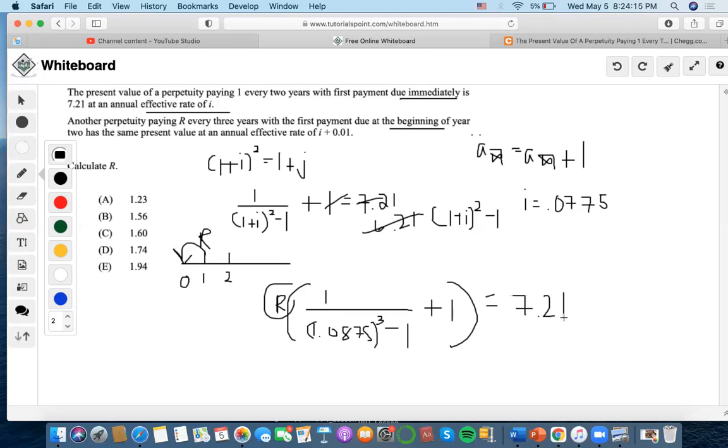So 1.0875 to the three minus one, the denominator is 0.28613. Then one divided by 0.28613 plus one equals 4.49.